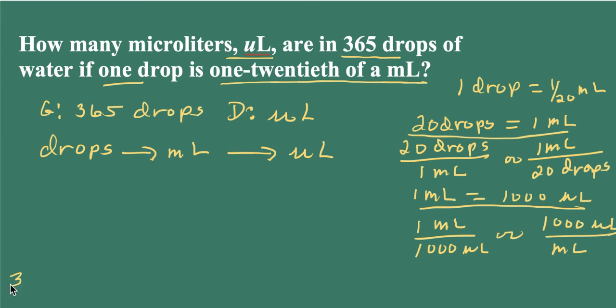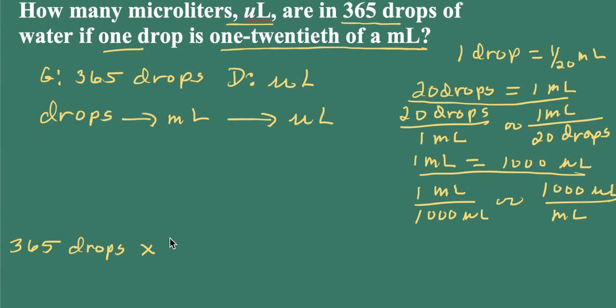So I start with my given. I have 365 drops of water. And I need to multiply this by the conversion factor that will cancel out drops and leave me with milliliters. So I'll look at these two conversion factors here. So I'm going to use this second one. So 1 milliliter is 20 drops. And the drops cancel. And if I stopped right here, I'd calculate my answer in milliliters. But we need to go from milliliters to microliters. So I'm going to multiply again by a conversion factor using this equivalence that will cancel out milliliters and leave me with microliters.